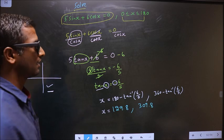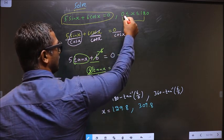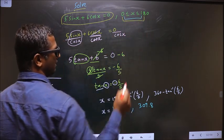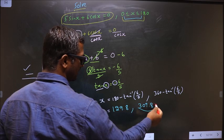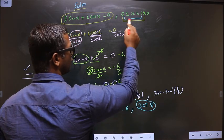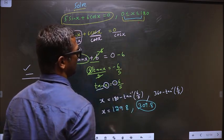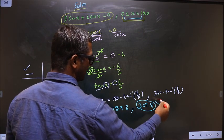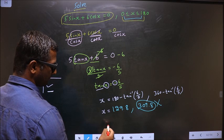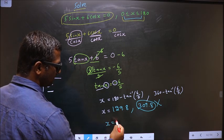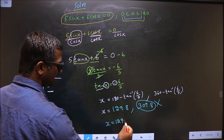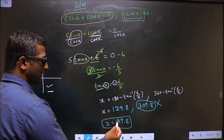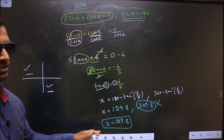Here you see, x should lie in this interval. But here 309.8 does not lie in this interval. So what we conclude is we should reject this value. So x takes only one value that is 129.8. This is our answer.